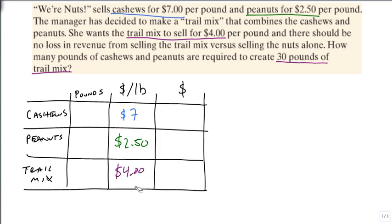And again, remember that we only need the $4 really. The $4 is between the $7 and the $2.50, which is really important. We also know that we have 30 pounds of trail mix.